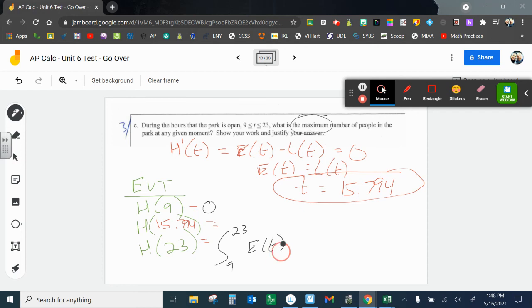And now when I put in, same thing here, now I'm going to put in, I'm going from 9 to 15.794. I'm going to put that in, E(T) minus L(T). This is where you want to be able to copy what's already there. We get 3,950.680. So that shows us the maximum number of people at the given time is 3,950 or 3,951.